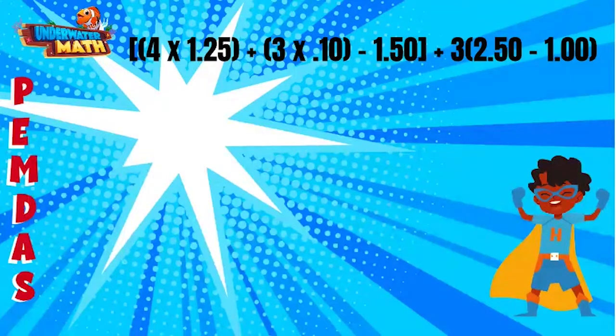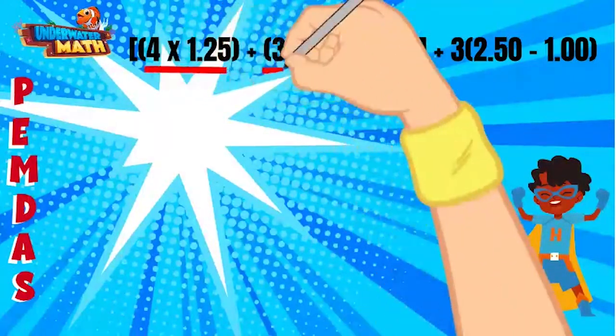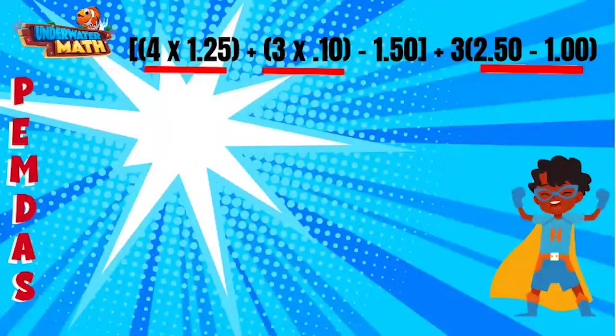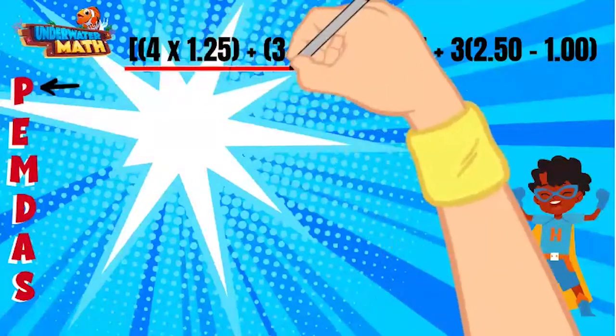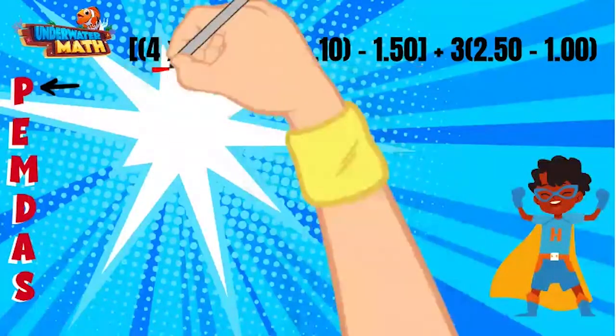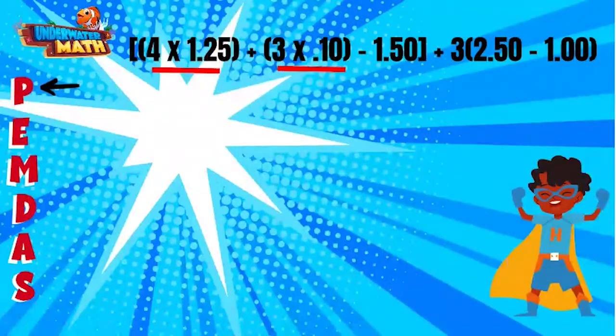You are right that this problem has three sets of parentheses, but some of those parentheses are in brackets, so we start there. Four times 1.25 is five, which I will replace in our next line.